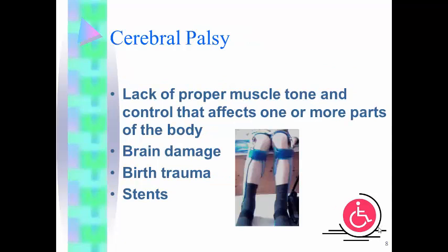Cerebral palsy is lack of muscle tone or control that affects your arms, legs, hands, the trunk of your body, neck muscles, mouth, throat muscles, and ability to swallow. Why does this happen? It can be brain damage that occurs during birth, or the person may have a condition known as hydrocephaly or microcephaly. Hydrocephaly, also known as water on the brain, causes the skull to swell because there's too much fluid not draining through the body. They have to put in a stent — a plastic tube that runs from the head down through the body so the fluid drains and is released normally through urination.